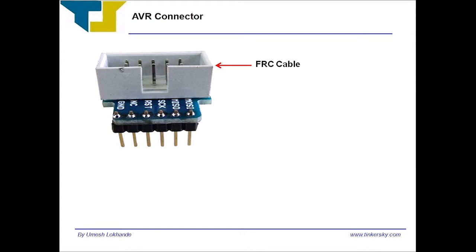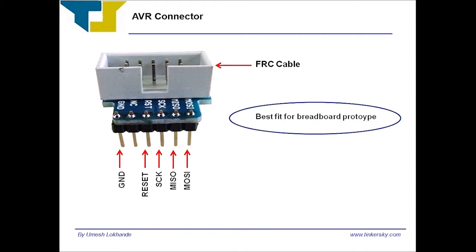First, we need the FRC cable coming out from the AVR USB Programmer, which fits into the 10-pin ISP header of a module. The pins drawn from this FRC cable are MOSI, MISO, SCK, Reset, and Ground. This module has been designed as a best fit for breadboard prototype.